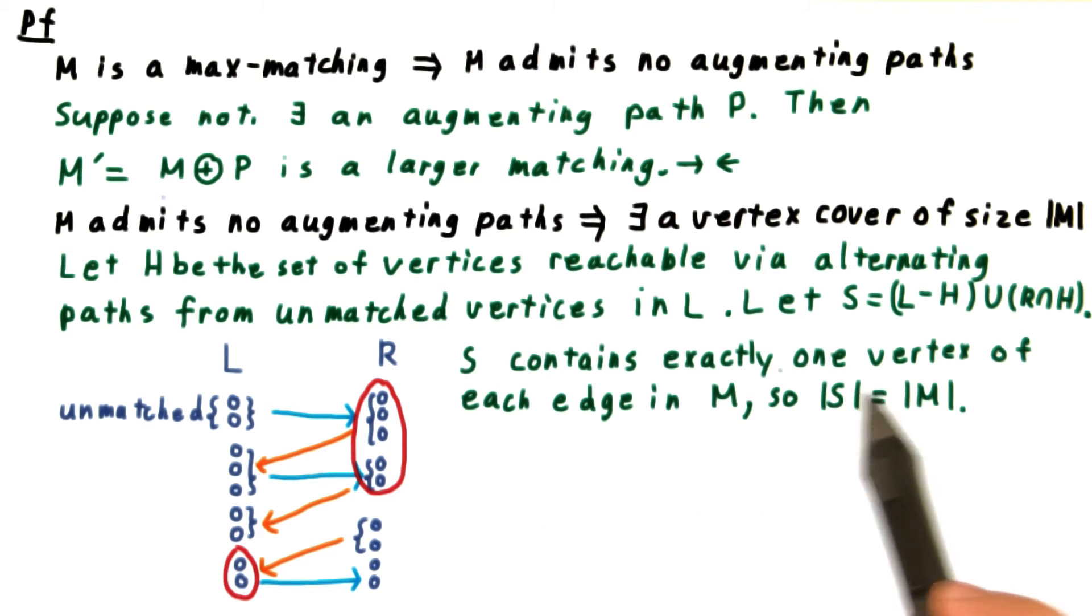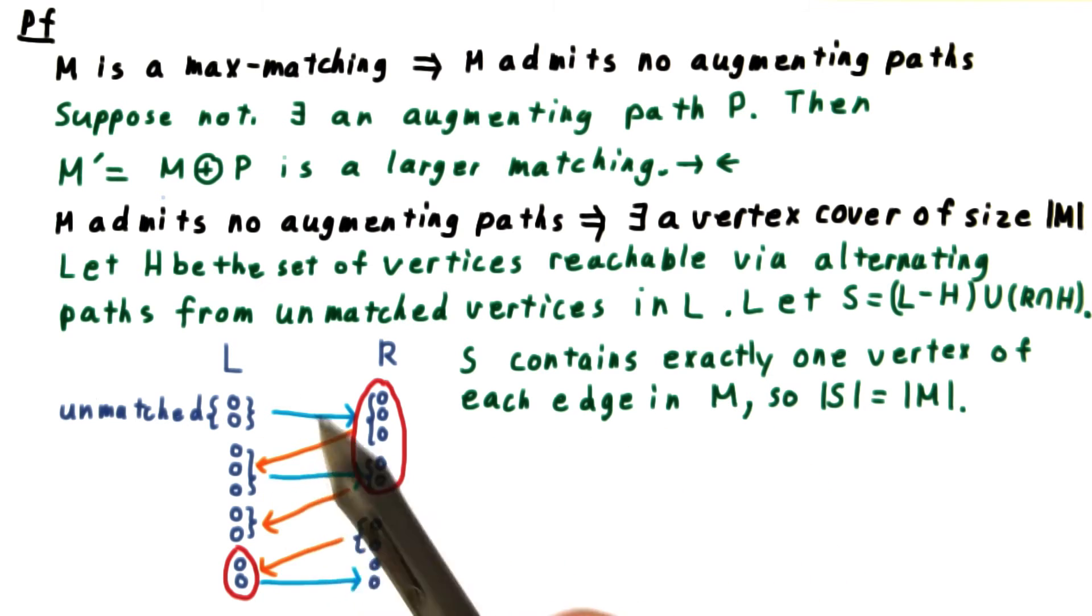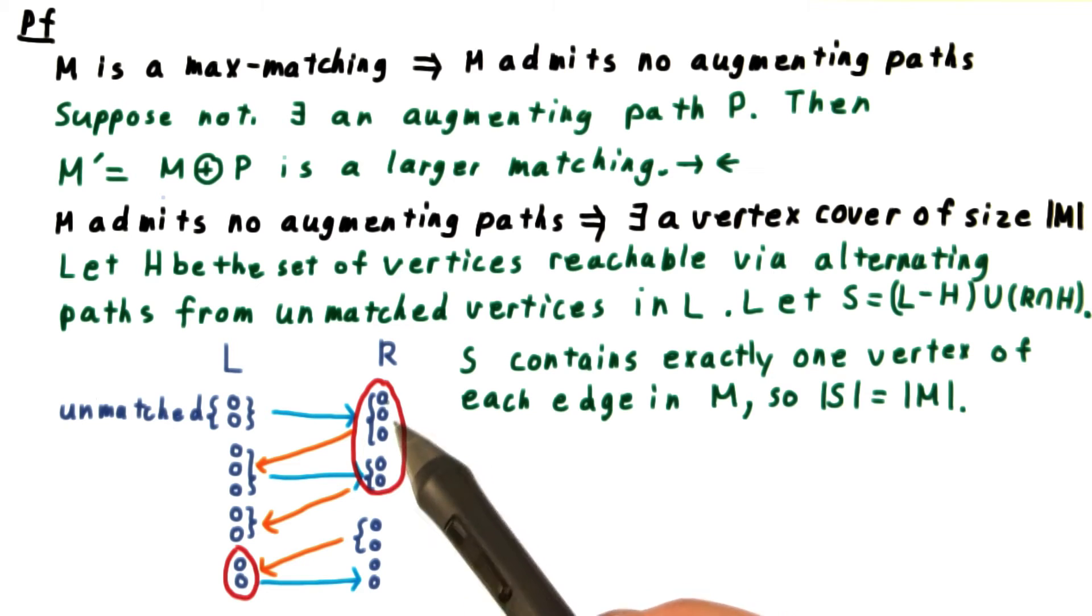S contains exactly one vertex of each edge in M. If the edge in M happens to belong to H, then we got its right side. And if it doesn't belong to H, then we got its left side. So the size of S and the size of M must be the same.